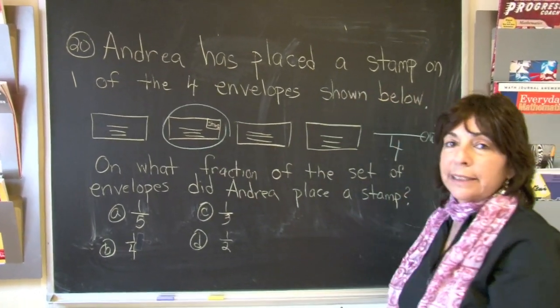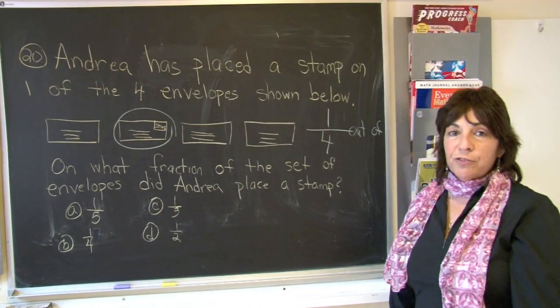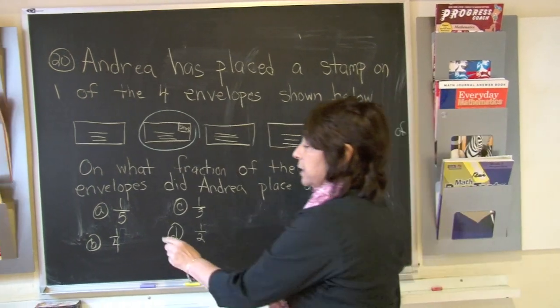That becomes our numerator. One out of four has a stamp, so the answer is B.